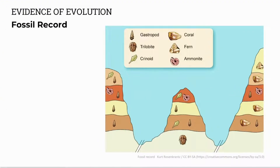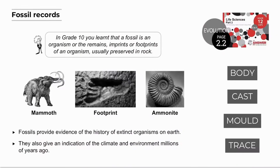The fossil record is the first evidence we'll look at. You're familiar with fossils from Grade 10 but we'll give a brief overview first. A fossil is either the organism itself or the remains, imprints or footprints of an organism preserved in rock. It's evidence of the history of past organisms, whether extinct or existing species, and provides information about past climates and the impact of humans on the environment and biodiversity.